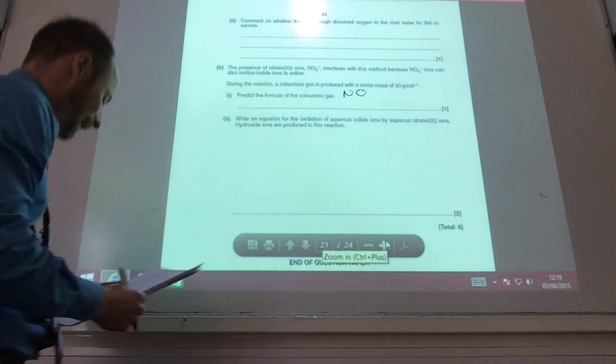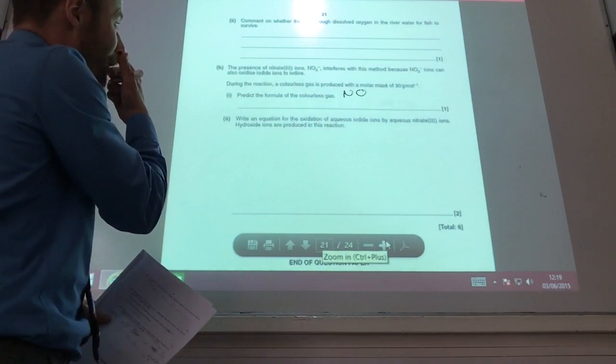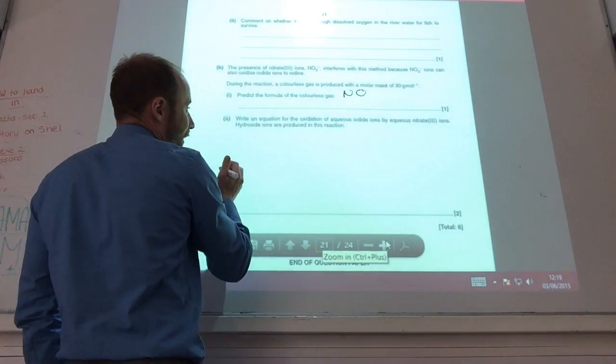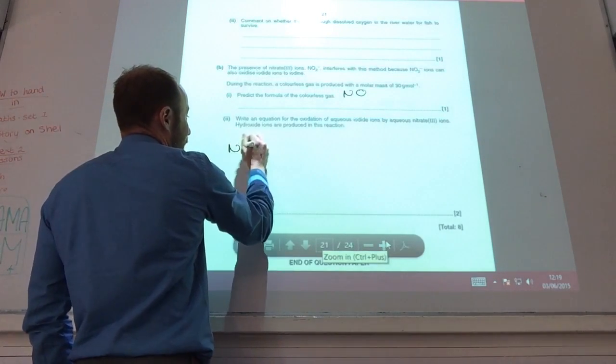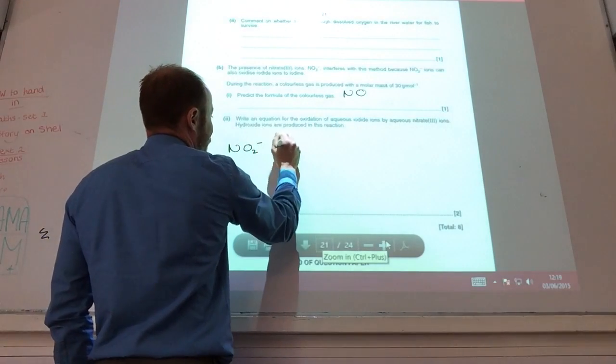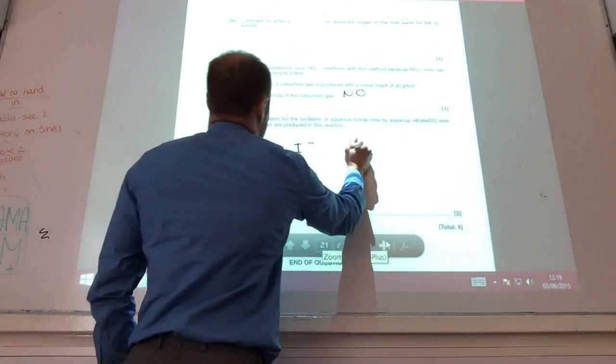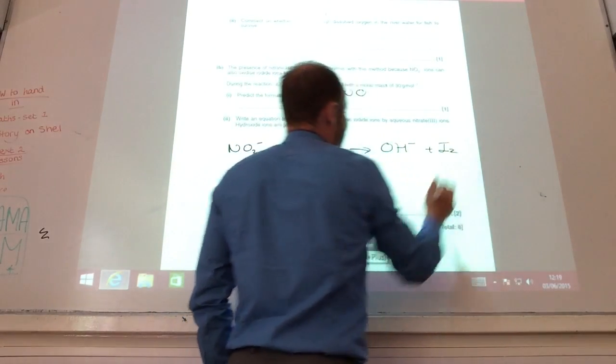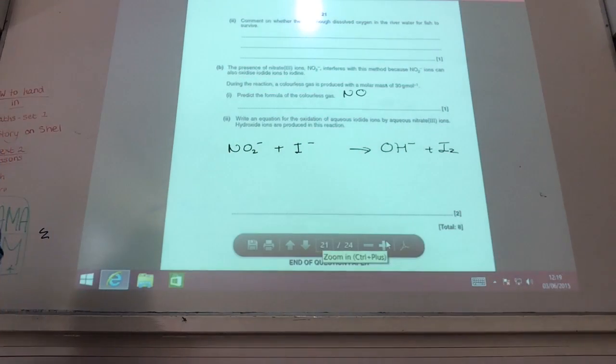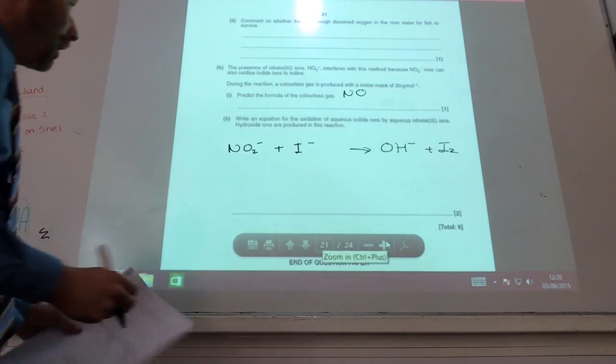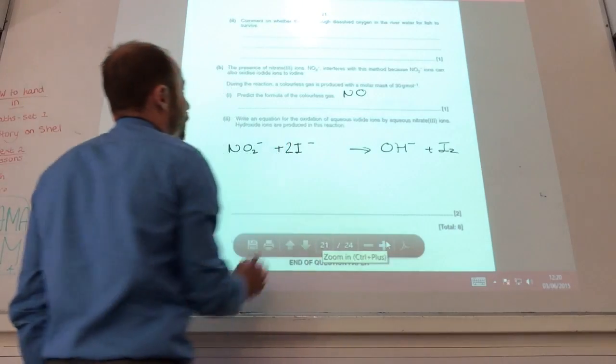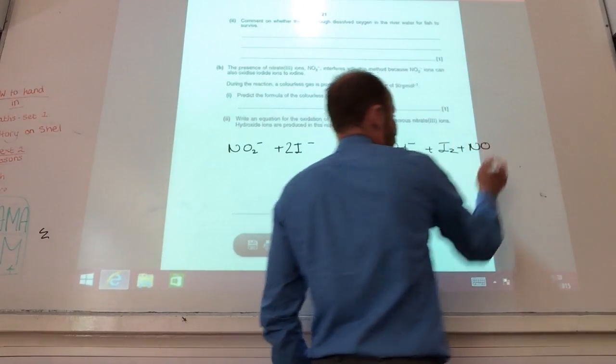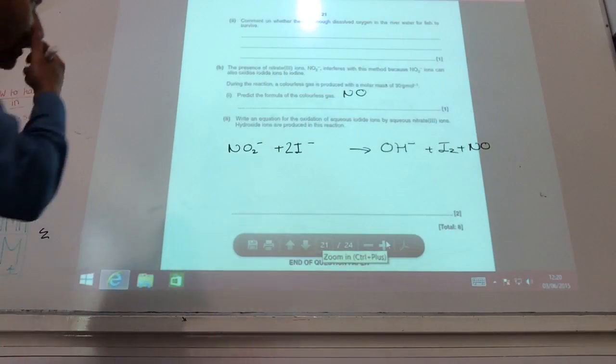They then want me to do the equation. So write an equation for the oxidation of iodide ions by nitrate 3 ions. So I've got nitrate ions, I've got iodide ions. It tells me I make hydroxide ions, and I've also made iodine, like so. I've got to first of all have two of those, and I also know I make nitrogen monoxide gas as well.